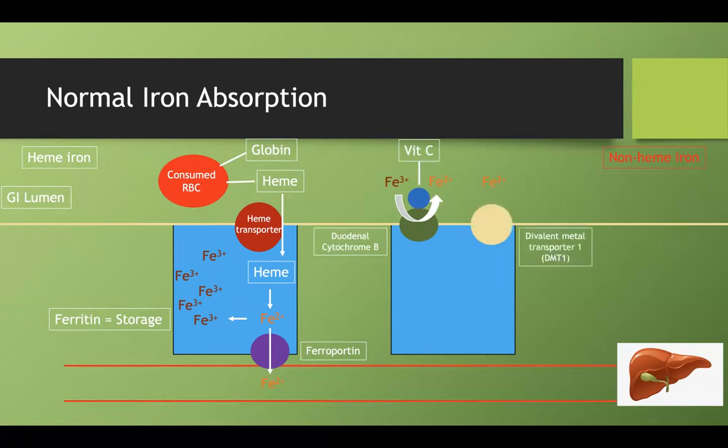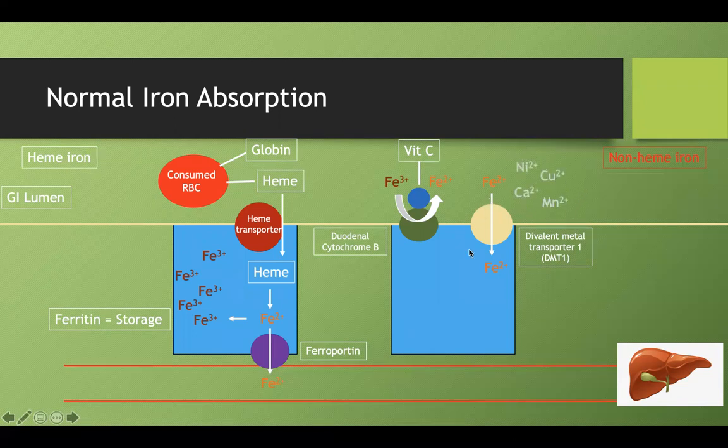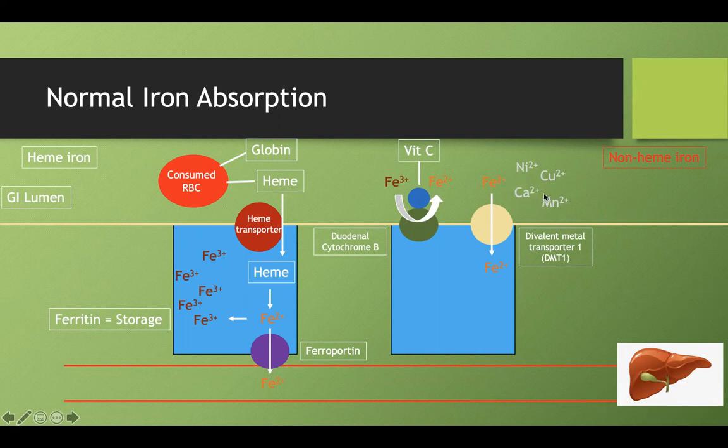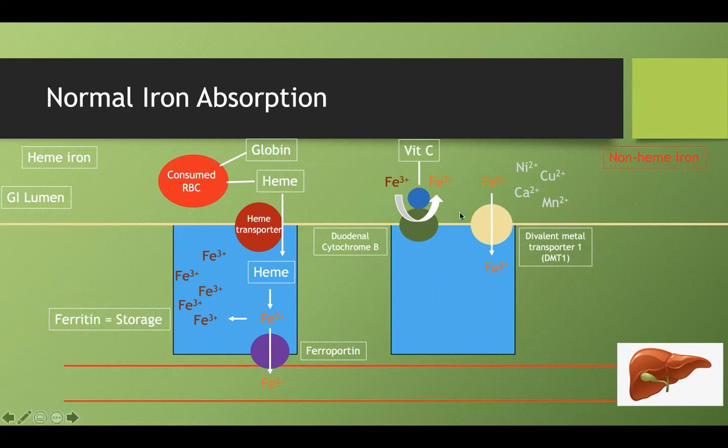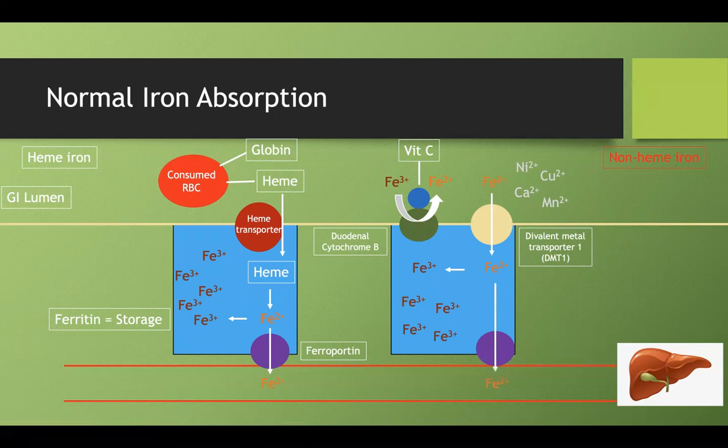Now that we have it in the ferrous form, we need to get it into the cell using the DMT1 transporter. Keep in mind, this transporter is a divalent metal transporter, so it's not specific to just the 2+ form of iron. It's any divalent metal. All these divalent metals can use this same transporter. That's why if you took an iron tablet and drank a lot of milk, you might have decreased absorption because the DMT1 transporter might be using all its resources to absorb the calcium instead of your iron. Once this iron makes it into the enterocyte in ferrous form, it can do the same two steps we saw for heme iron. It can either be stored in the enterocyte in ferric form, or it can use ferroportin to be released into the bloodstream.